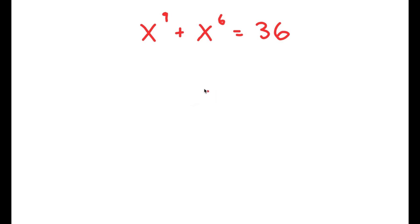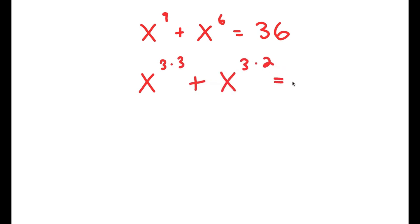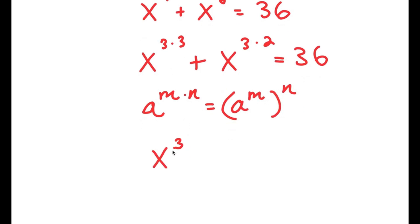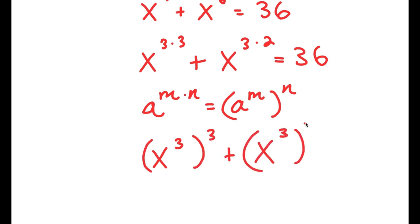In this problem, I have x to the power of 9 plus x to the power of 6 is equal to 36. To solve this, I'm going to first rewrite this as x to the power of 3 times 3, plus x to the power of 3 times 2, is equal to 36. Using the exponent rule that a to the power of m times n equals a to the power of m to the power of n, x to the power of 3 times 3 equals x cubed to the power of 3, and x to the power of 3 times 2 equals x cubed squared.